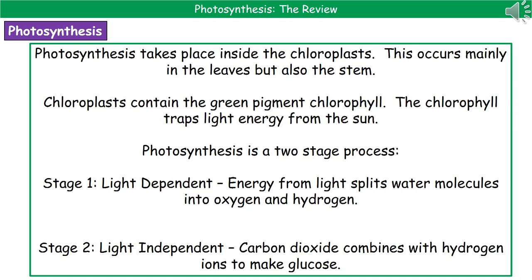Photosynthesis takes place inside the chloroplasts. Because of this, it generally occurs within the leaves, with a small quantity happening within the stem, because that's where the chloroplasts are located primarily. The reason it happens there is because chloroplasts contain a green pigment called chlorophyll, and it's the chlorophyll that's able to trap the light energy from the sun — and it's that light energy that makes photosynthesis take place.